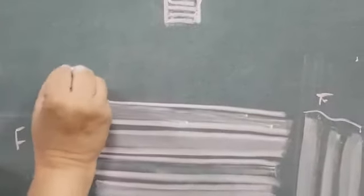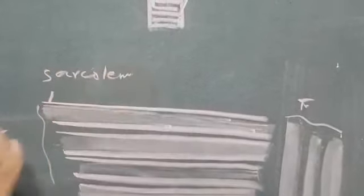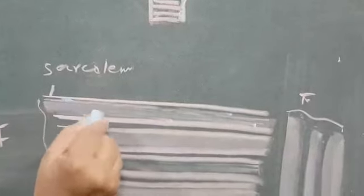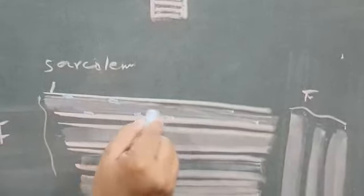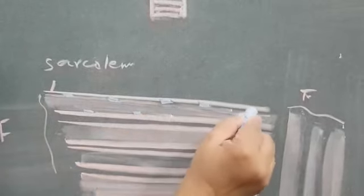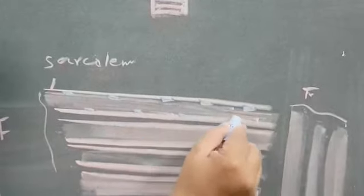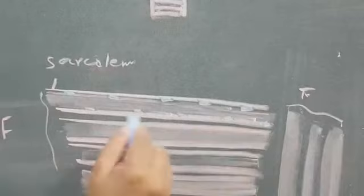One fascicle, one fascicle. Now, this is sarcolemma. Beneath sarcolemma, you will draw ovoid nuclei. And these nuclei, they are multiple and just within sarcolemma.